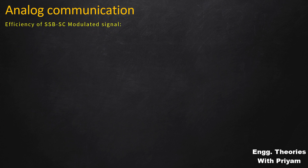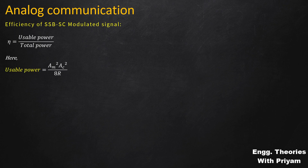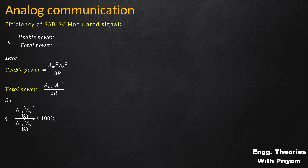For the efficiency of the SSBSC modulated signal: efficiency η = usable power / total power. The usable power is the power of the transmitted sideband (upper or lower), which equals Am²·Ac²/(8R). The total power of the SSBSC signal is also the power of that single sideband, which is also Am²·Ac²/(8R). Therefore, the efficiency of the SSBSC modulated signal is 1, or 100%.